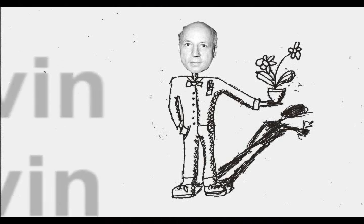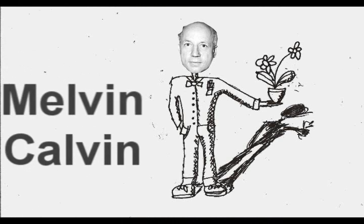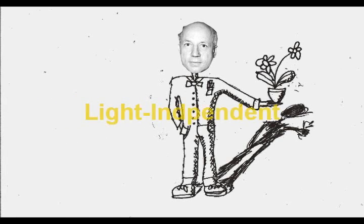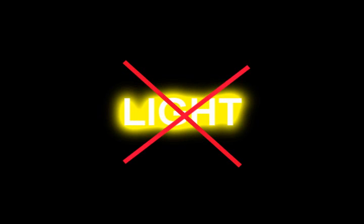The next cycle we are going to look at is the light-independent process, or the Calvin cycle. This is what completes the process of photosynthesis. The Calvin cycle is named after the American scientist Melvin Calvin, who worked out the details of the cycle. It is also called the light-independent process because, as the name implies, it doesn't need light energy to carry out the cycle.